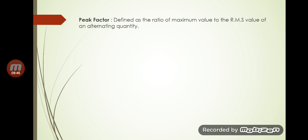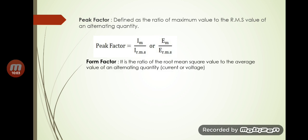Now let us see two important factors. Peak factor is defined as the ratio of the maximum value to the RMS value of an alternating quantity: peak factor equals Im / IRMS or Em / ERMS. Form factor is the ratio of the RMS value to the average value: form factor equals IRMS / I_average or ERMS / E_average.